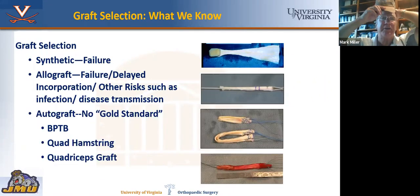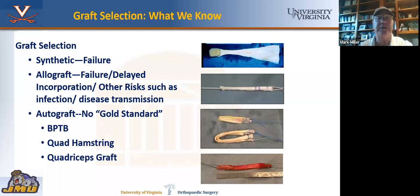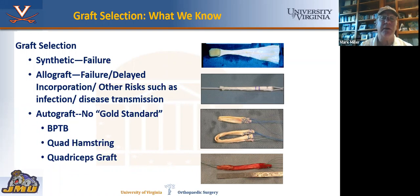Graft selection has evolved. Synthetics were tried initially with abysmal failure rates. Allografts were real popular, but we realized those have high failure rates too — four to five times the amount of failures in the West Point study. They can also have disease transmission and infection, so most of us have migrated to autograft. There are three autografts commonly used: patella tendon, hamstring, and quadriceps. Most of us still use patella tendon, especially in younger patients. Quadriceps or quad hamstrings are still a reasonable choice, but probably not in younger people or people with increased laxity.